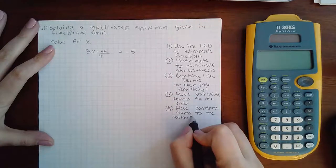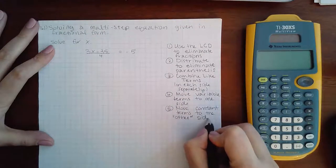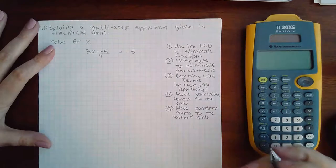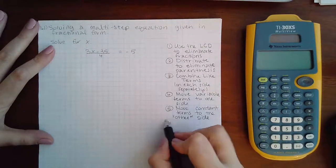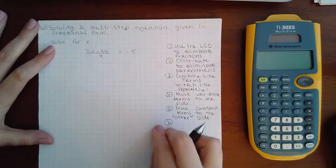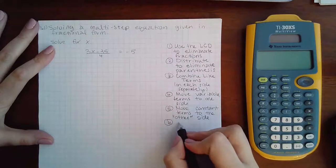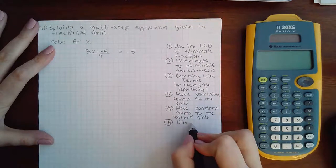So whichever side you move the variables, the opposite side is where you need to move the constants. And then you should have your variables on one side, your constants on the other when it's all said and done, which means the last step to do is divide.